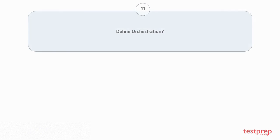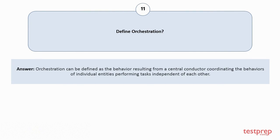Question number 11: Define orchestration? Orchestration can be defined as the behavior resulting from a central conductor coordinating the behaviors of individual entities performing tasks independent of each other.